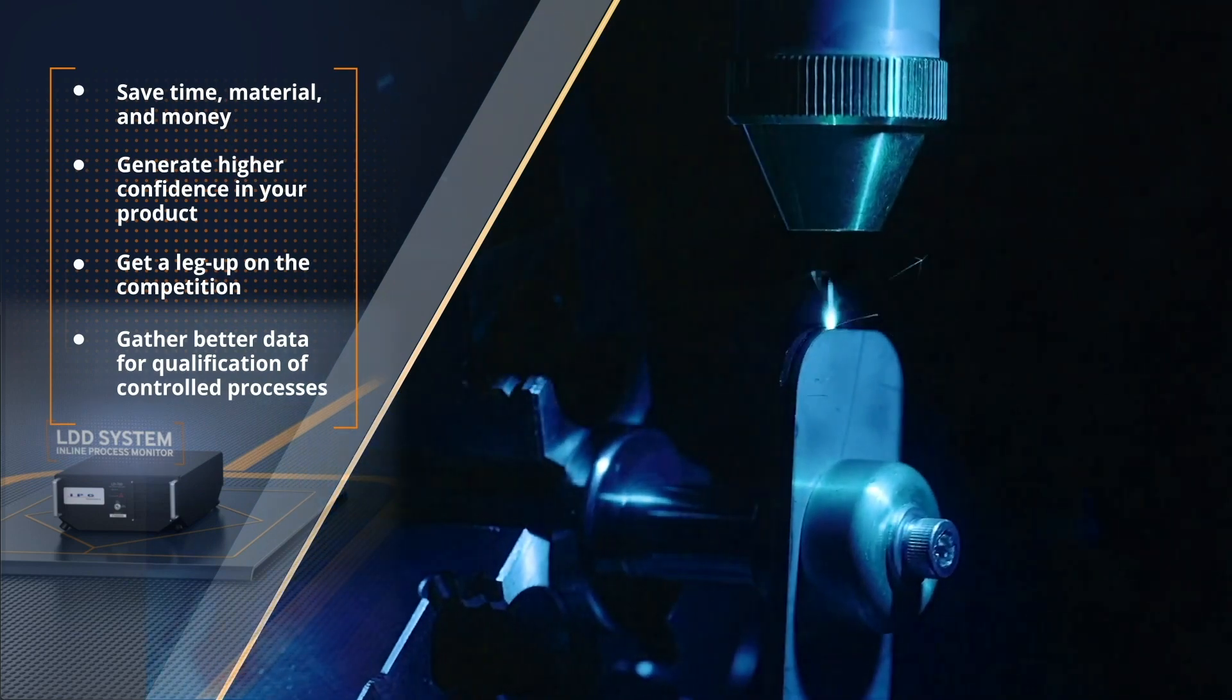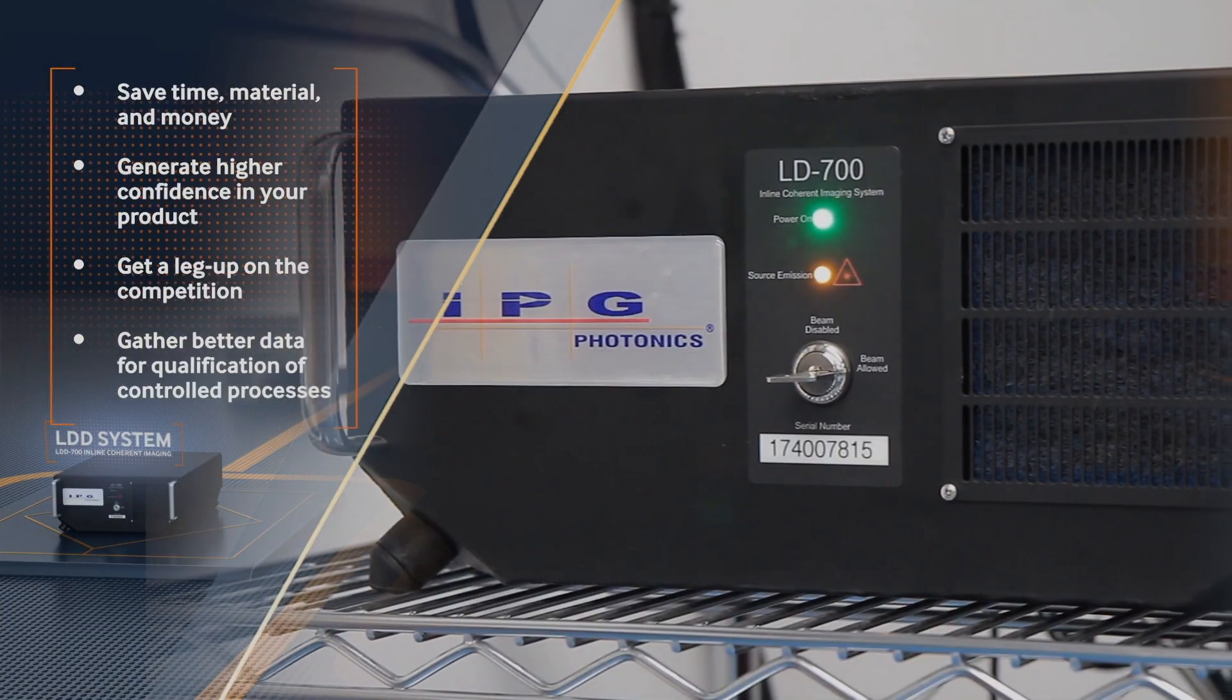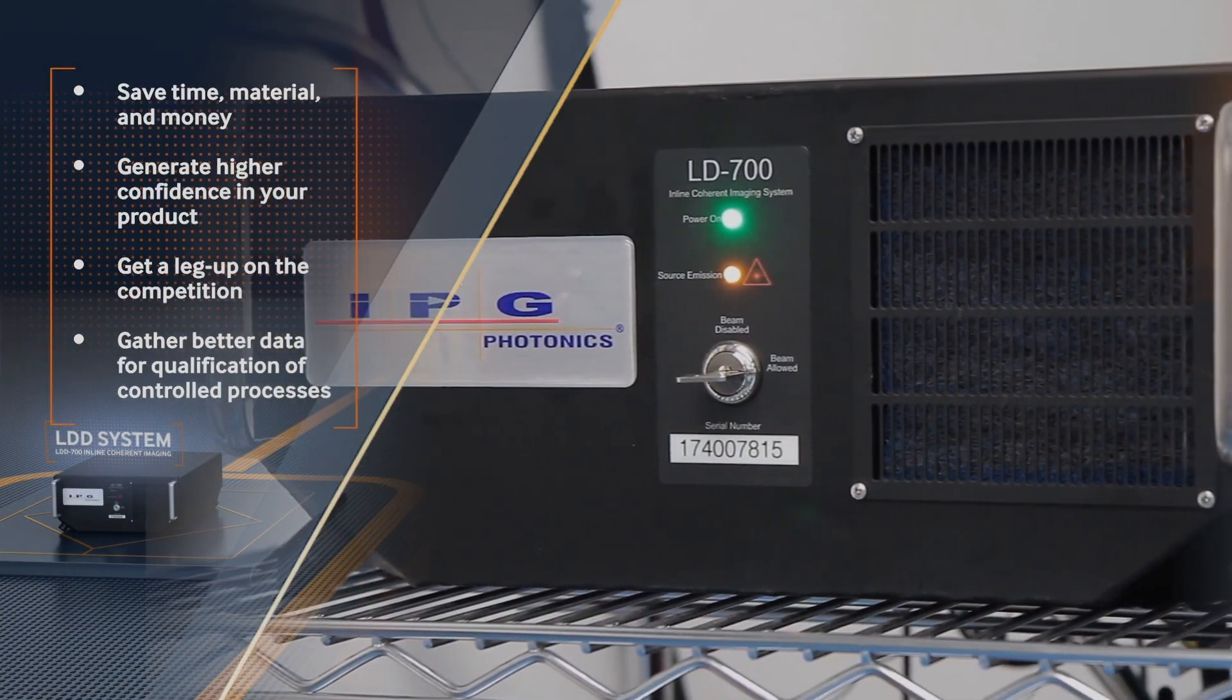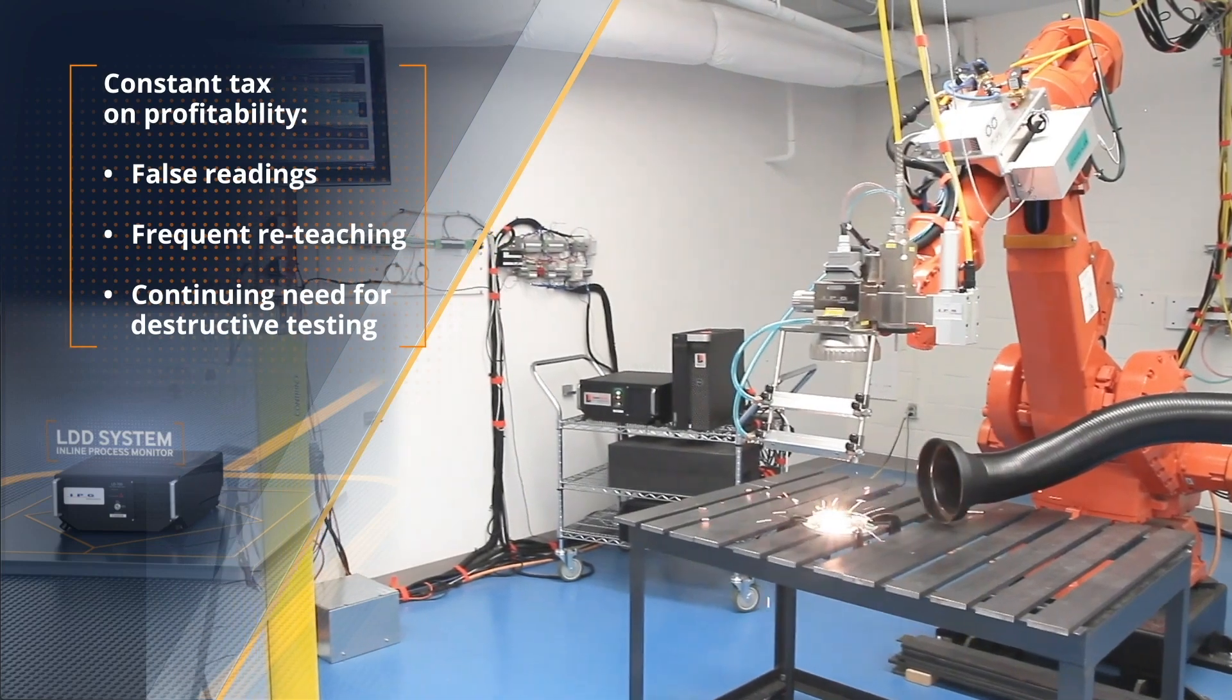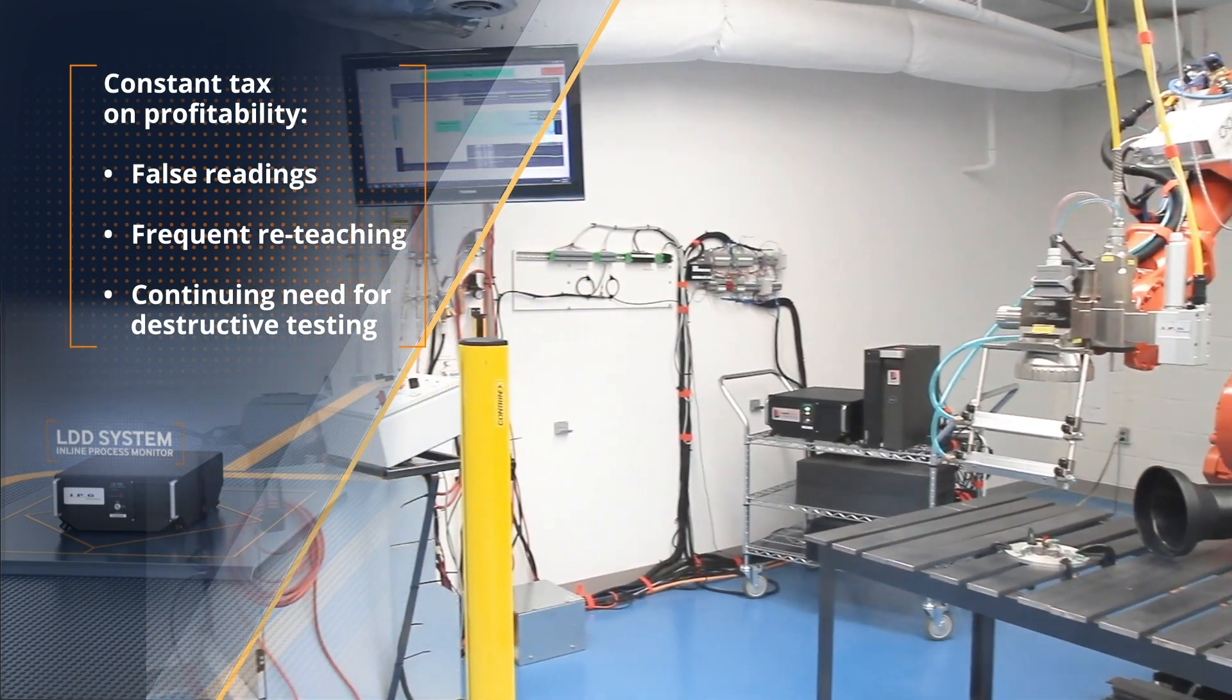Legacy systems can be difficult to maintain and trust in production because they only monitor the process indirectly using light emitted from the surface of the weld. False readings, frequent reteaching, and the continuing need for destructive testing are a constant tax on profitability.